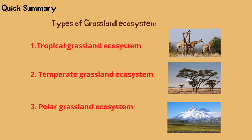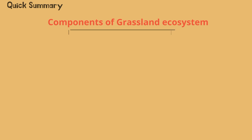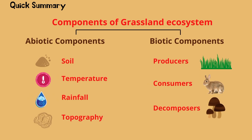Now let us go through a quick summary of what we have learnt so far. Grassland ecosystems are broadly categorized into three types: tropical grassland ecosystem, temperate grassland ecosystem, and polar grassland ecosystem. Abiotic and biotic components are the two components of the grassland ecosystem. The abiotic components are soil, temperature, rainfall, and topography, whereas the biotic components are categorized into producers, consumers, and decomposers.